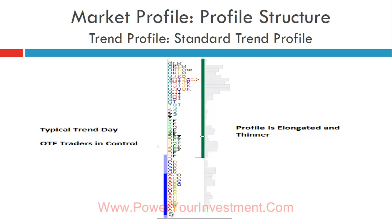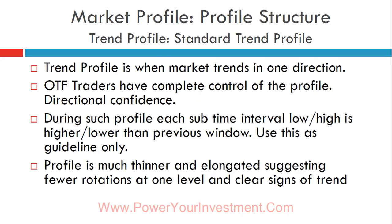On a trend day, the textbook rule says the low of A is never breached by B, the low of B is never breached by C — higher highs and higher lows. However, don't be rigid about this rule. There are trend days where the B sub-profile goes below the A sub-profile, or C goes below B or A, but eventually prices just keep moving up. Be flexible.